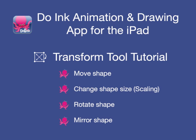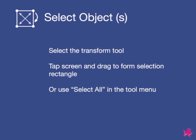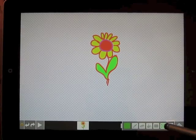This is a tutorial to show how the Transform tool can be used in the Doink iPad app to change the size or orientation of an object. To begin, select the Transform tool from the toolbar.